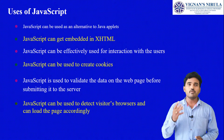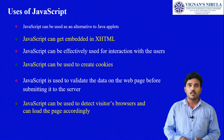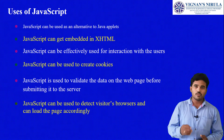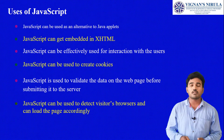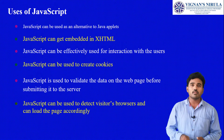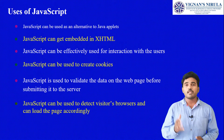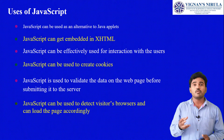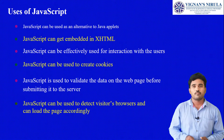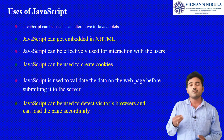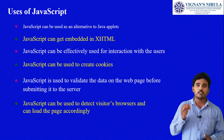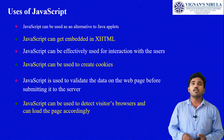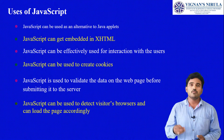The second use is that JavaScript can be embedded in XHTML. Third, JavaScript can be effectively used for interaction with users, as it provides forms such as buttons and menus. JavaScript can also be used to create cookies, to validate data on a web page before it gets submitted to the server, and to detect the visitor's web browser and load the page accordingly.